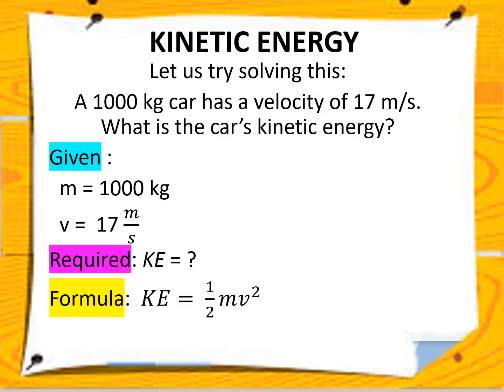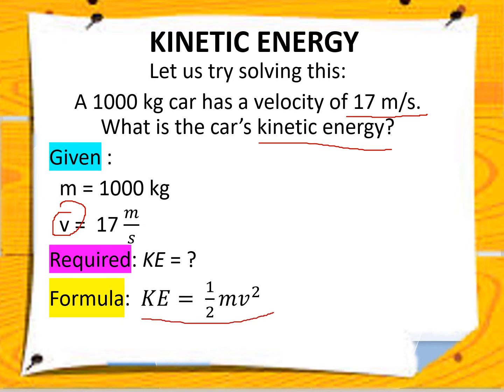Let's try solving this problem. A 1000 kilogram car has a velocity of 17 meters per second. What is the car's kinetic energy? First, identify the given: mass equals 1000 kilograms, velocity equals 17 meters per second. What is required? The problem is asking for the kinetic energy. Therefore, the formula that you are going to use is KE equals one half mv squared.